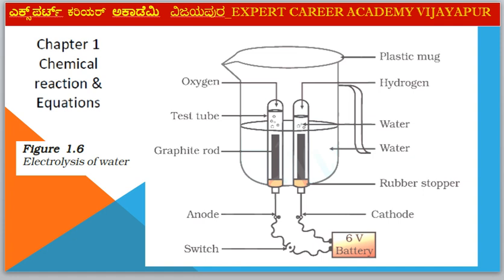Chapter 1: Chemical Reactions. The first important diagram is Electrolysis of Water.